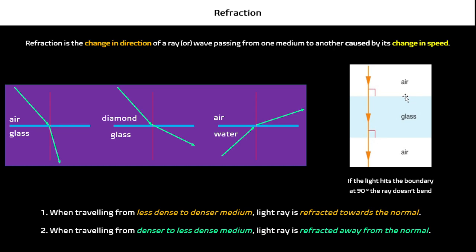The key information to put in your head is these two sentences: when you're travelling from less dense to denser, the light ray is refracted towards the normal; when you're travelling from a denser to less dense medium, the light ray is refracted away from the normal. That is the concept you should be remembering. Here's a special case: when your light ray hits the plane at 90 degrees — when your angle of incidence is 90 degrees — it is not going to be bending. There won't be any refraction; it will go straight into your medium.